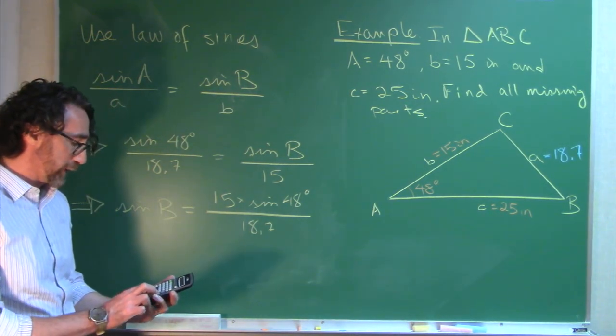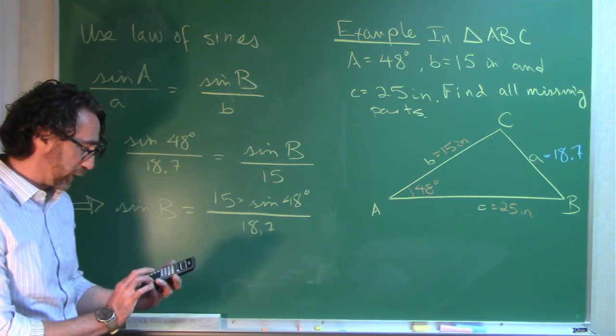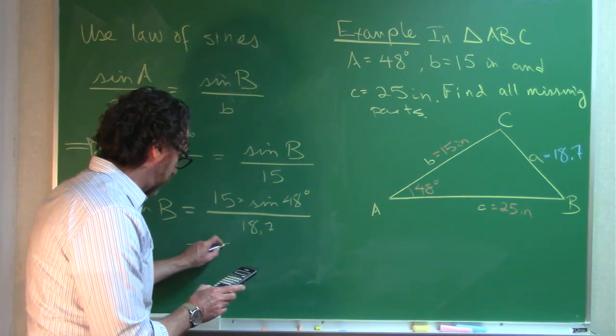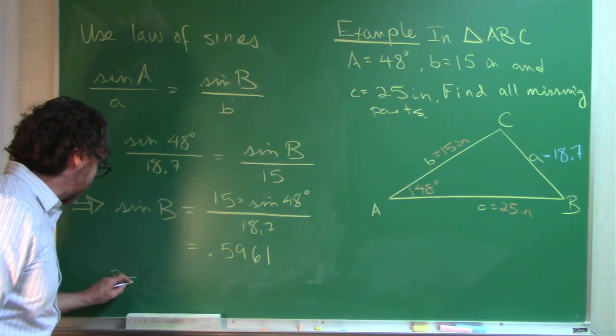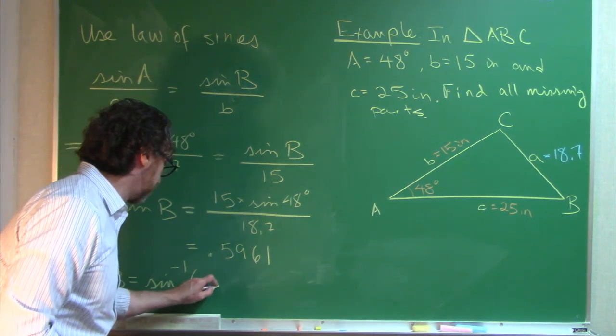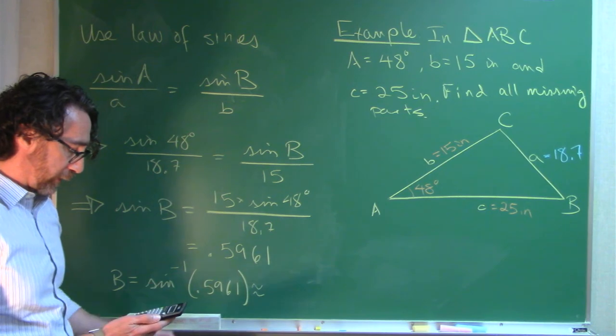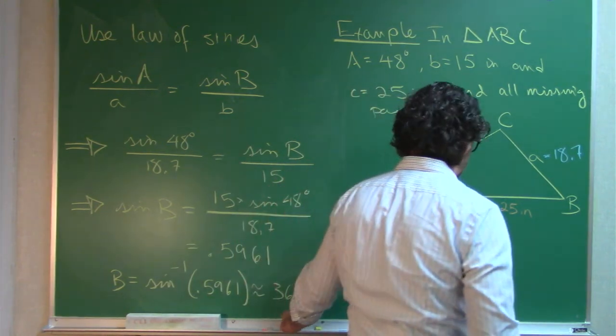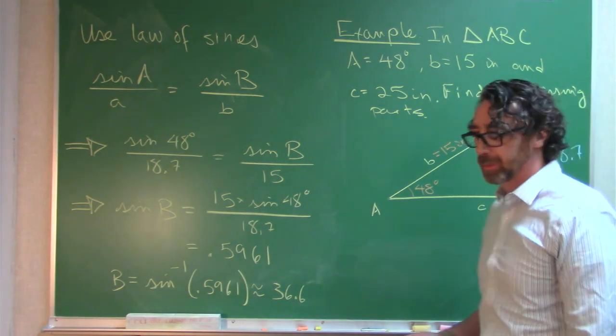Back to some number crunching. 15 times 48 sine, divide by 18.7 equals, so sine B is equal to 0.5961, approximately. So to find the angle, I will take the inverse sine, and let's see, getting approximately 36.6. So that is angle B, 36.6.